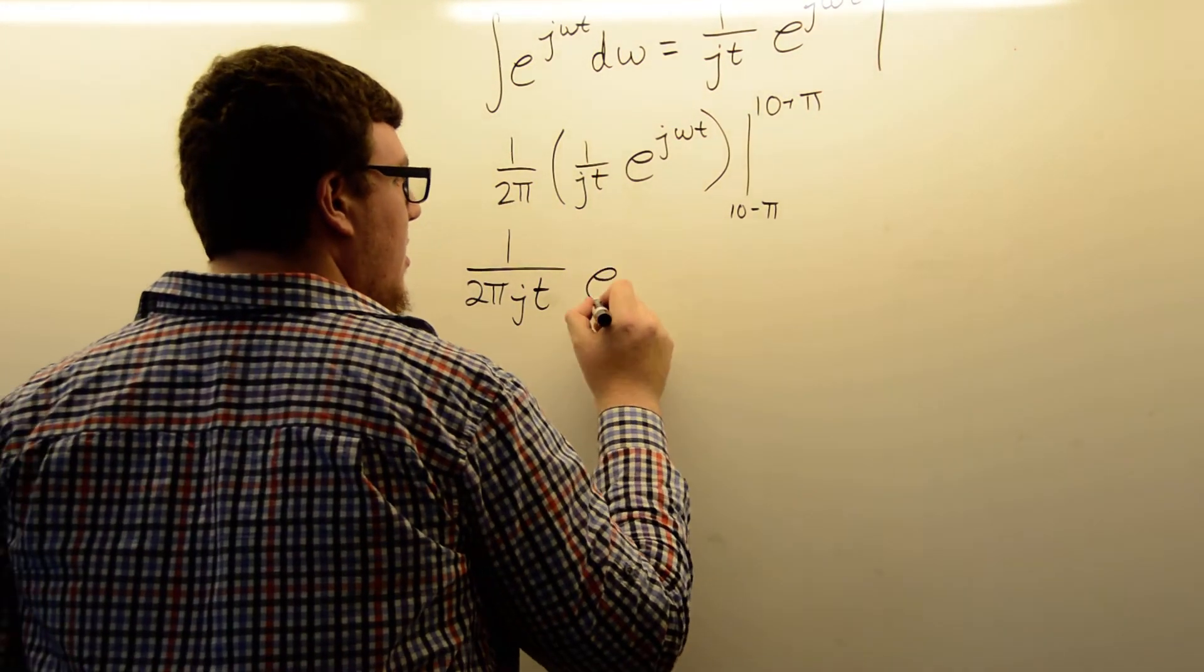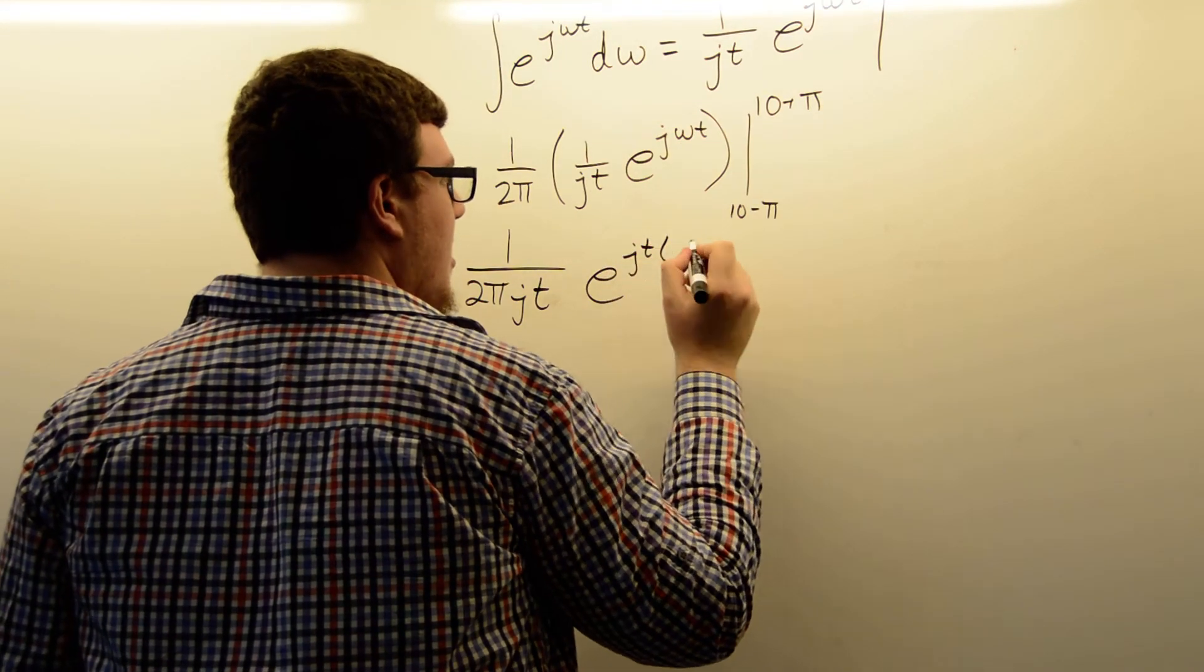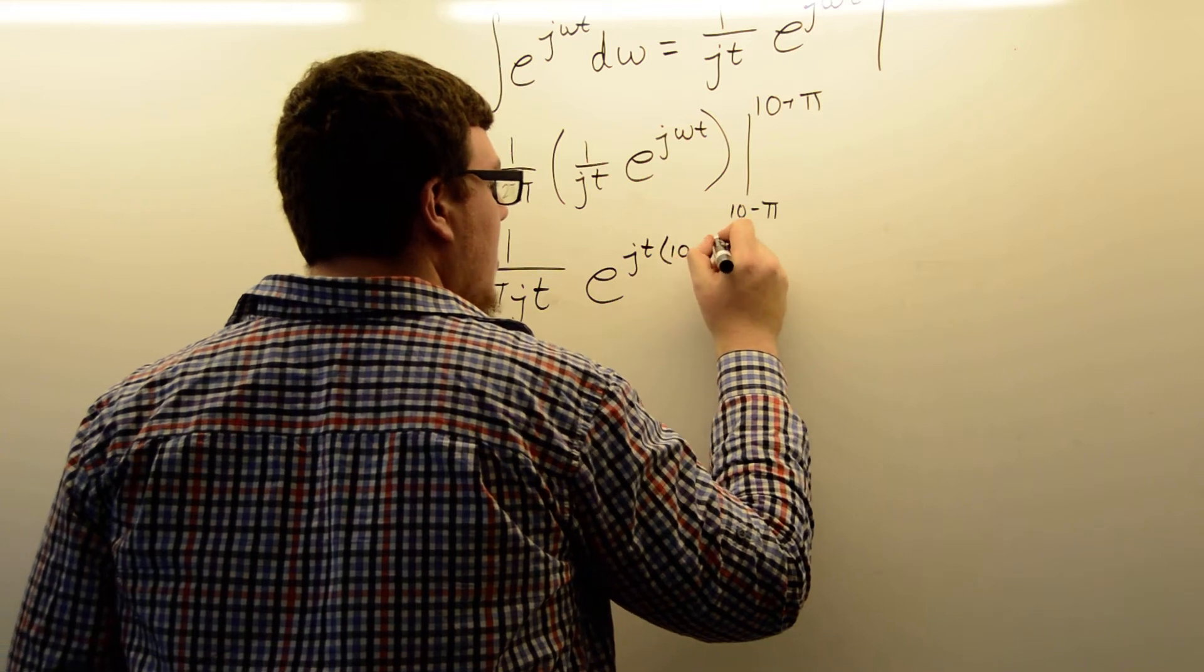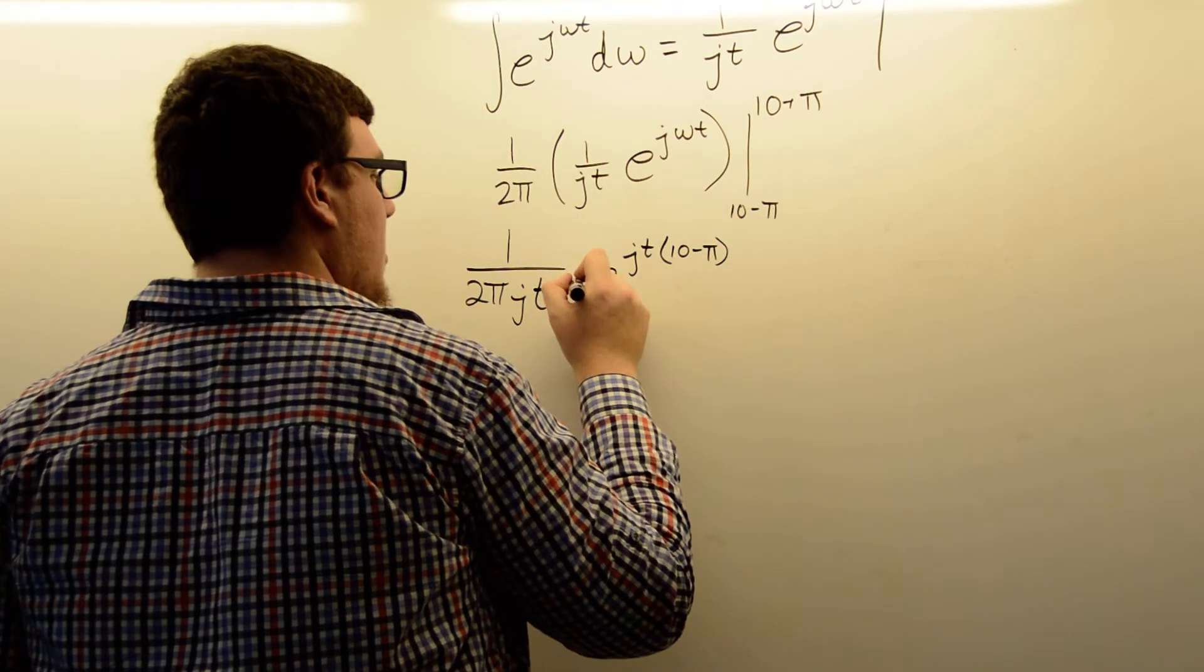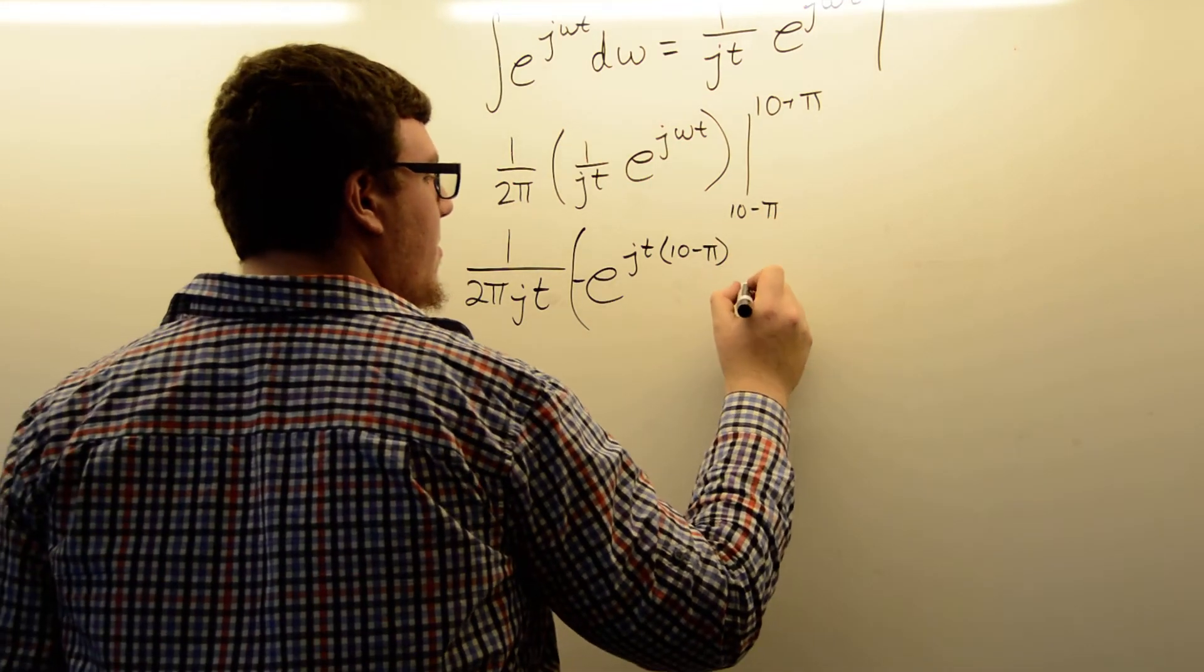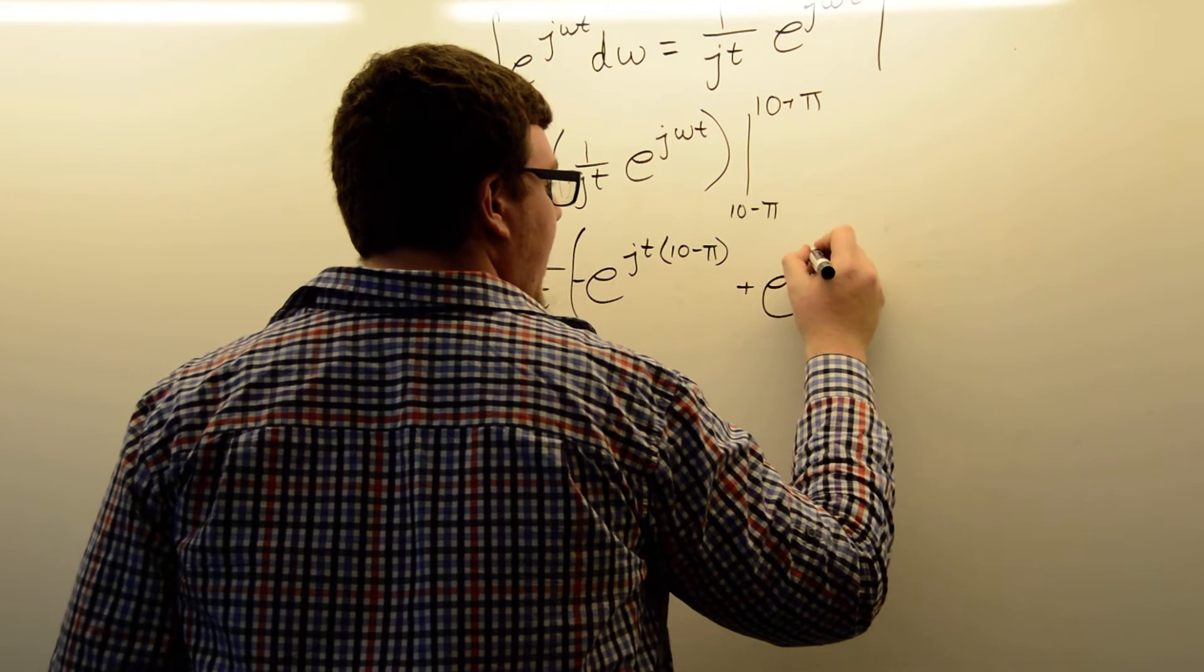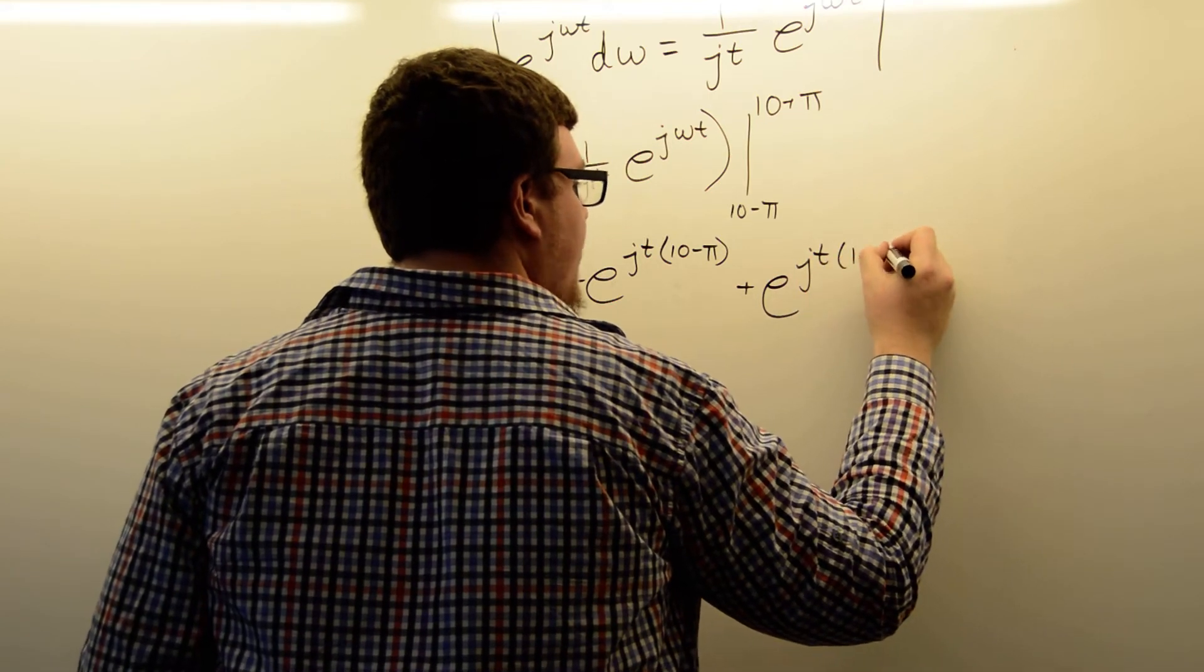e to the jt times 10 plus π, minus out in front as we evaluate the lower one, minus e to the jt times 10 minus π.